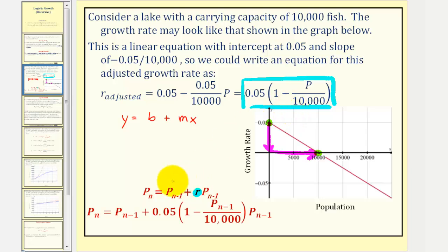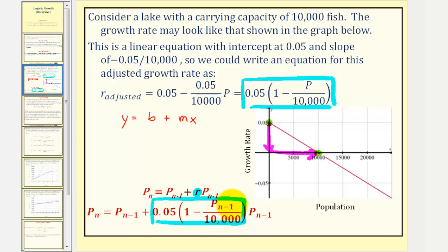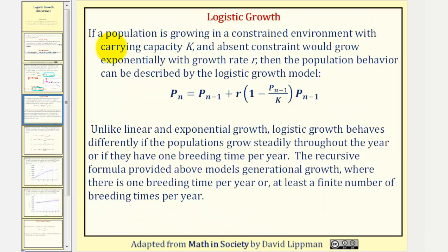By performing this substitution into our recursive equation, we now have a recursive formula for p sub n: p sub n equals p sub n minus one plus 0.05 times the quantity one minus p sub n minus one divided by 10,000, times p sub n minus one. This is a recursive equation that models logistic growth. To generalize, if a population is growing in a constrained environment with carrying capacity k and absent constraint would grow exponentially with growth rate r, then the population behavior can be described by the logistic growth model we just derived.